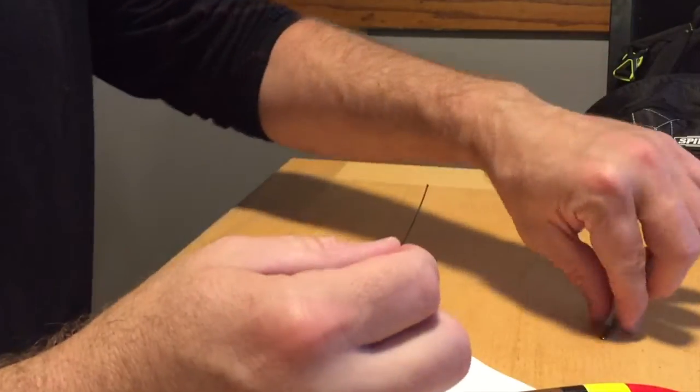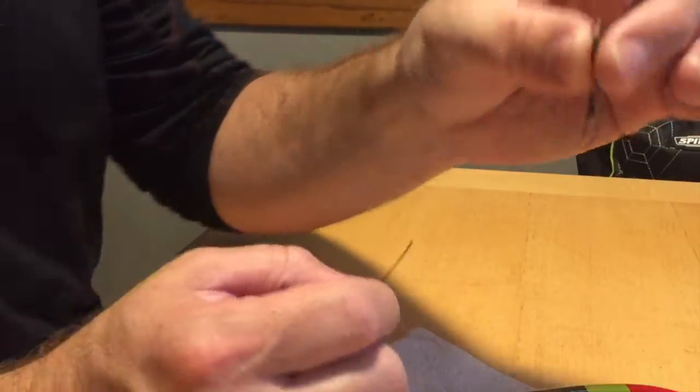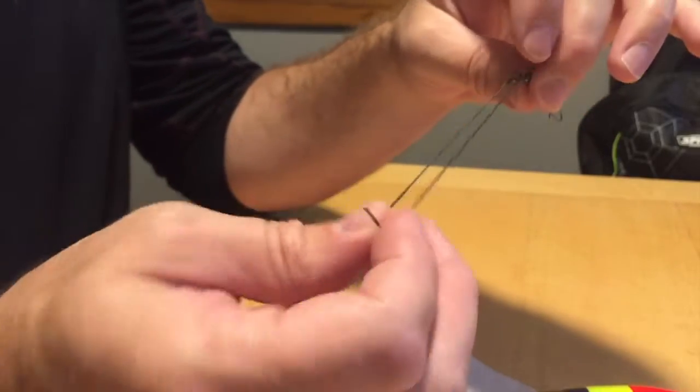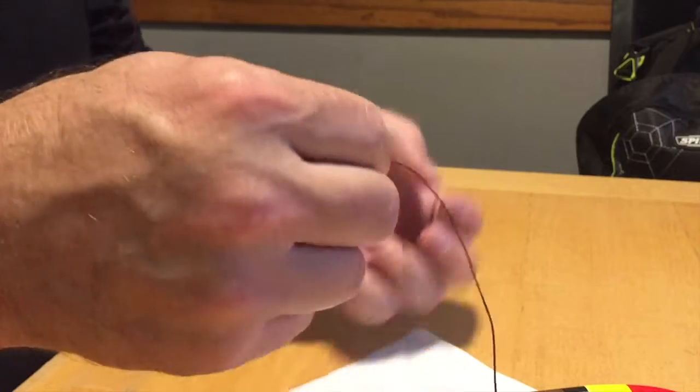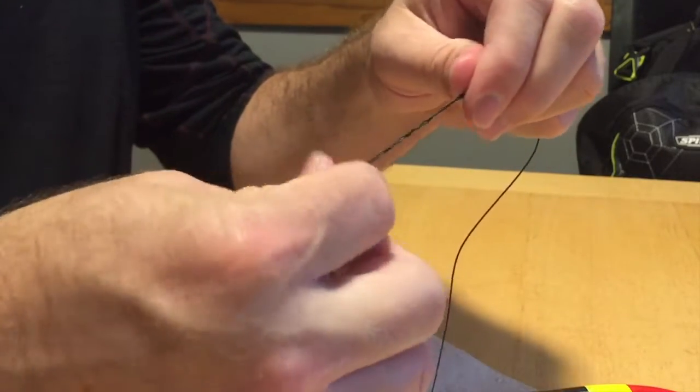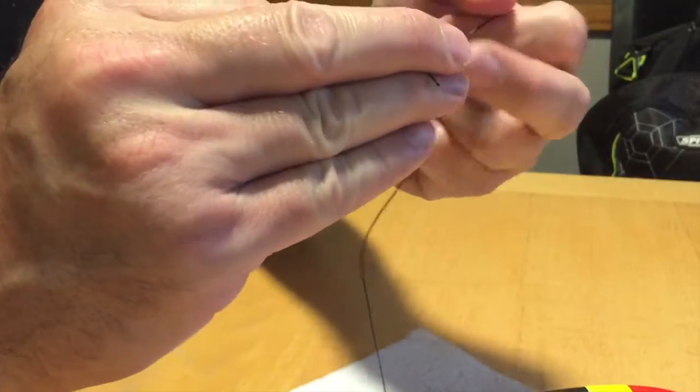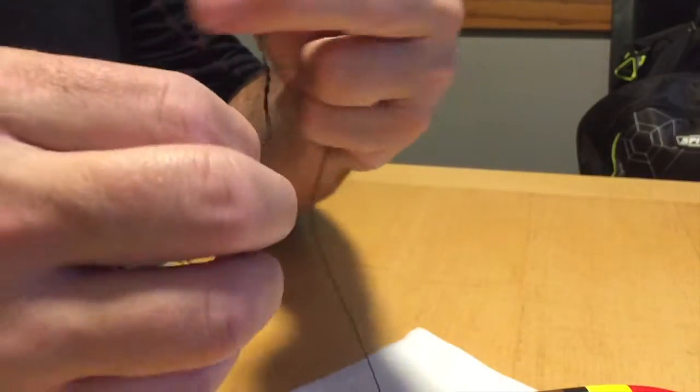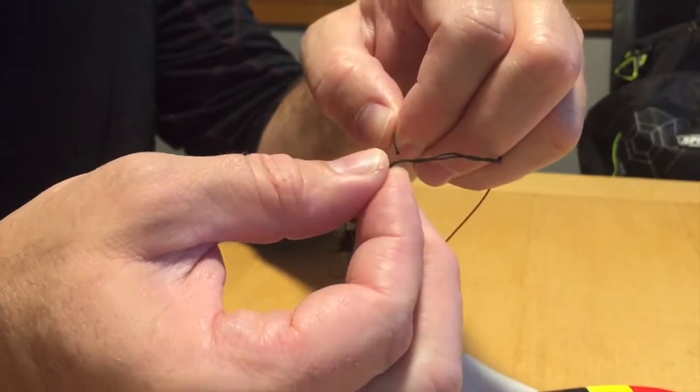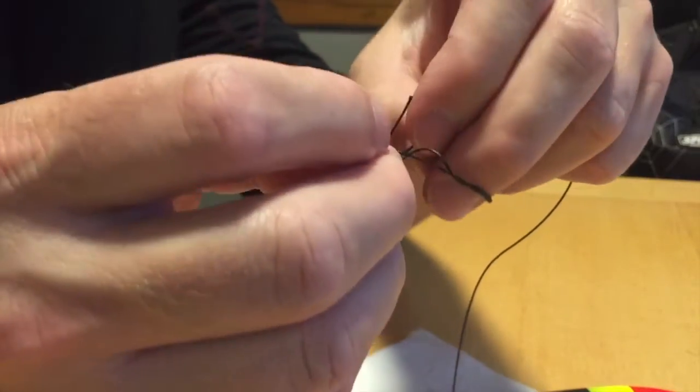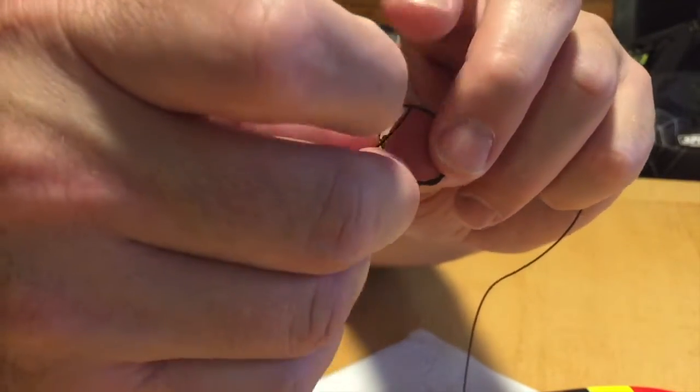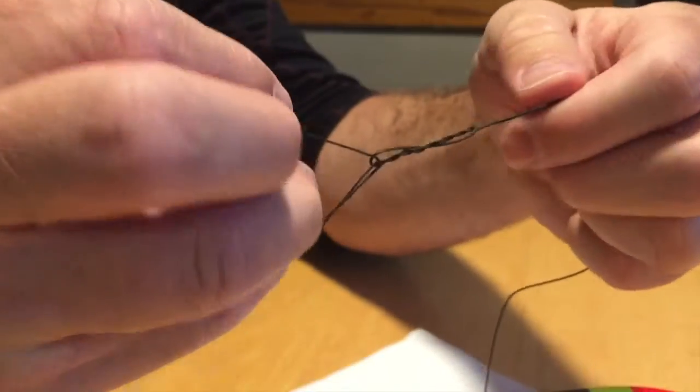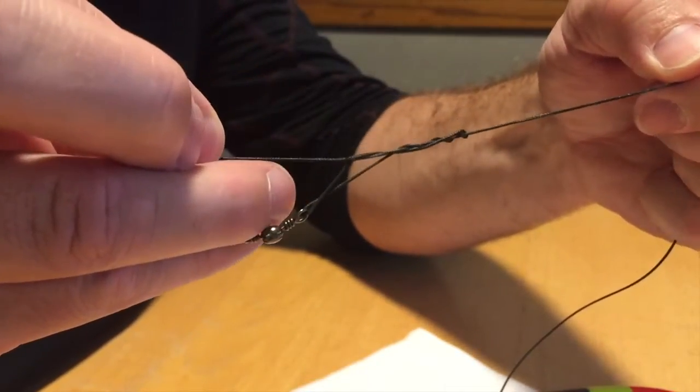So the next thing I'll do is tie on a quick release. So the quick release knot I'm going to do, you just feed it through and I'll spin that a few times. And then I'll take my string here and I'll feed it back through the top, and then I'll feed it through the big hole here. And then I'll take that and slowly pull down on that.